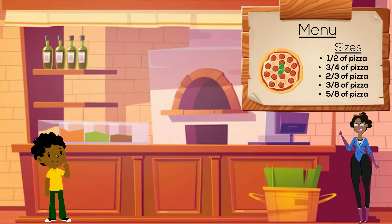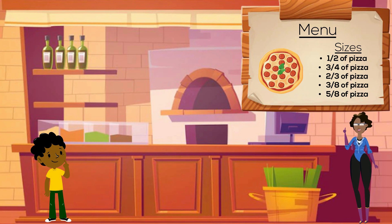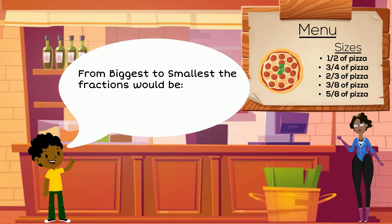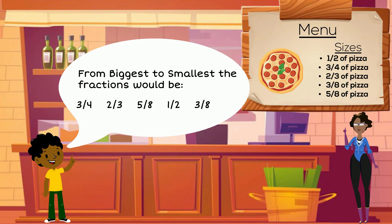So when John looks at the pizza menu and sees the fractions one half, three quarters, two thirds, three eighths, and five eighths, he is able to place these fractions in descending order to see which is the biggest. Go ahead and draw number lines and try to figure out what John's list would look like. The answer is: three quarters, two thirds, five eighths, one half, and then three eighths. Did you get these fractions in the correct order? Great job!